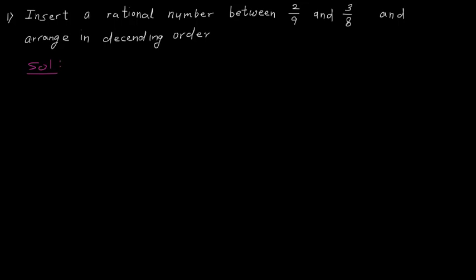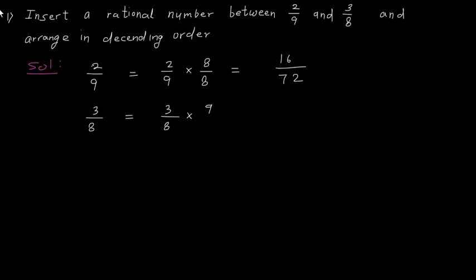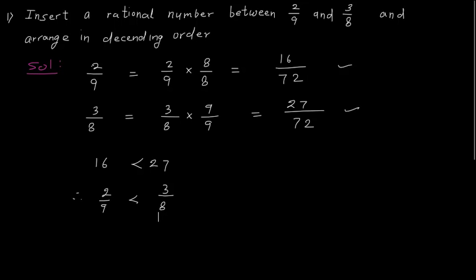I will multiply the numerator and denominator of 2 upon 9 by 8, so the denominator becomes 72. And I will multiply 3 upon 8 by 9 upon 9, so the denominator also becomes 72. So 2 upon 9 equals 2 upon 9 into 8 upon 8, which gives 16 upon 72. Similarly, 3 upon 8 equals 3 upon 8 into 9 upon 9, which gives 27 upon 72. Since 16 is less than 27, therefore 2 upon 9 is less than 3 upon 8.